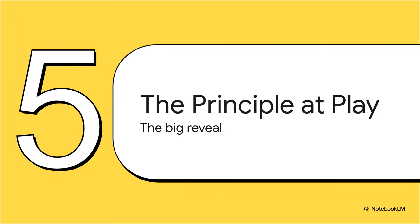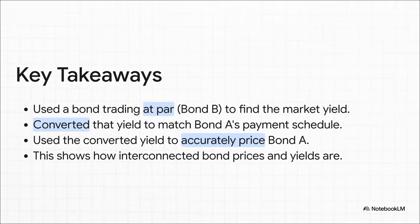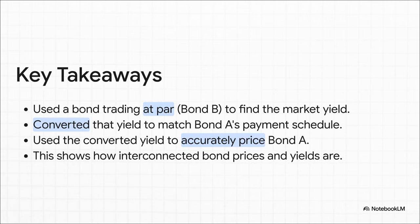The market price for Bond A is $99.92 — and that makes perfect sense. It's trading just a tiny bit below its par value of 100 because its semi-annual coupon of 4% is just a hair lower than the 4.04% yield the market is demanding. But honestly, the number itself isn't the most important part — it's the process. We took a clear signal from a bond trading at par to find the market yield, customized that yield for a different bond, and used it to calculate a price. It's a perfect example of how interconnected everything is in the market.